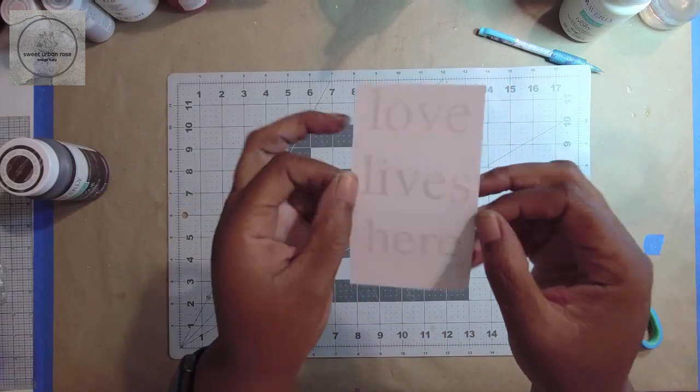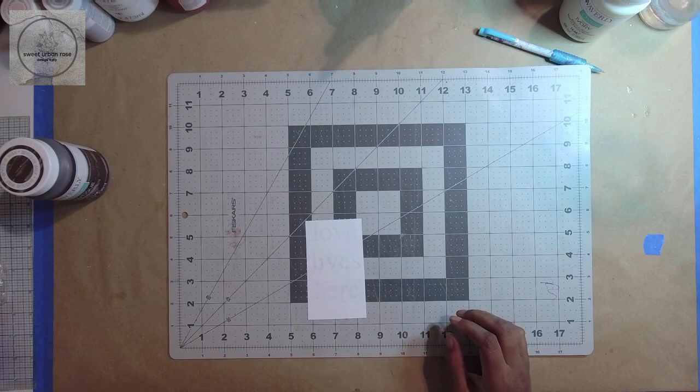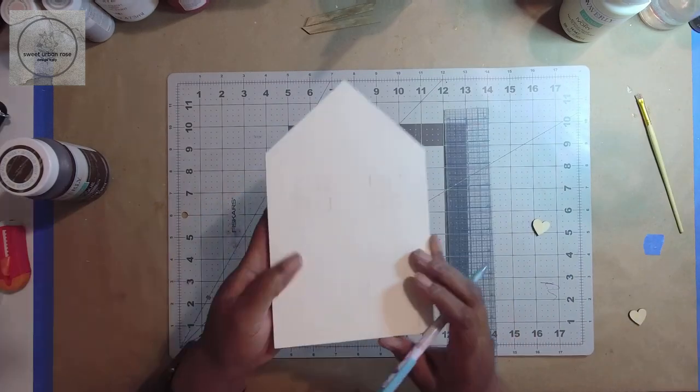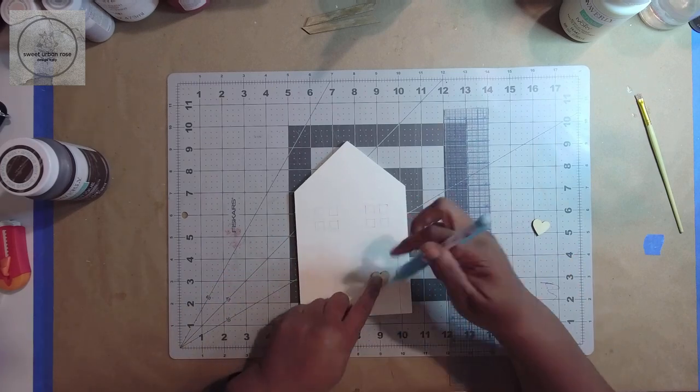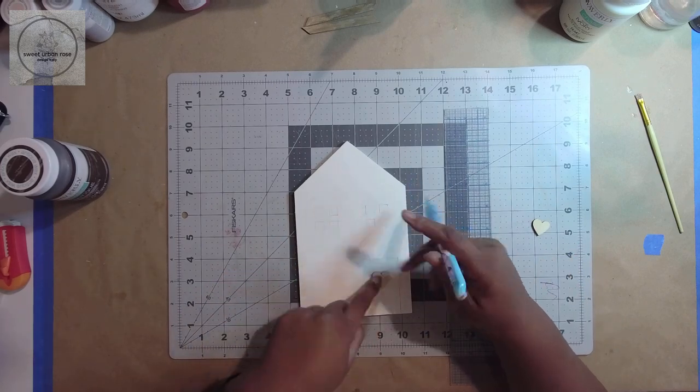I cut the words from the larger piece of paper and set it aside. Next, I added the window and the door details to the house and I used a small wooden heart from my stash to finish the door.